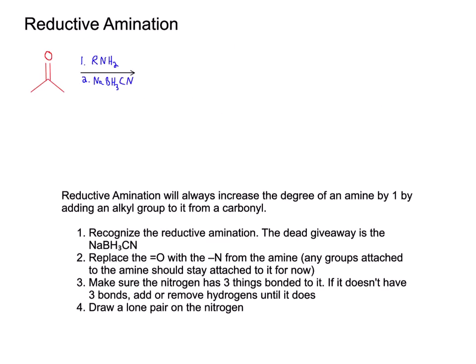The last reaction we're going to cover to synthesize an amine is called reductive amination. Reductive amination will always increase the degree of an amine by one by adding an alkyl group to it from a carbonyl. If you've already studied the addition reactions of carbonyls, then the mechanism that occurs when we react an amine with an aldehyde or ketone should be at least familiar to you — we end up getting a carbon-nitrogen double bond somewhere in that mechanism. This is where a new reducing agent comes in: NaBH3CN, which looks a lot like NaBH4. NaBH3CN is a very specific reducing agent that reduces carbon-nitrogen double bonds one time.